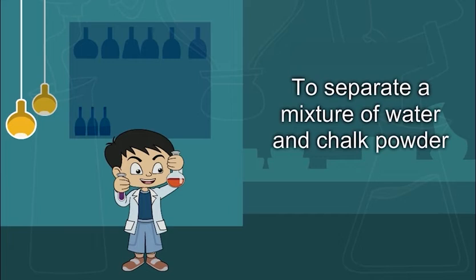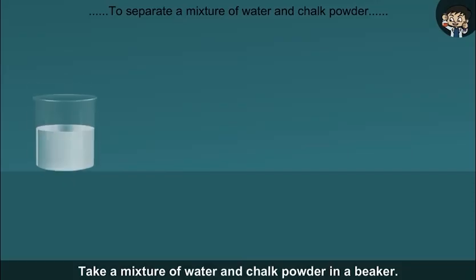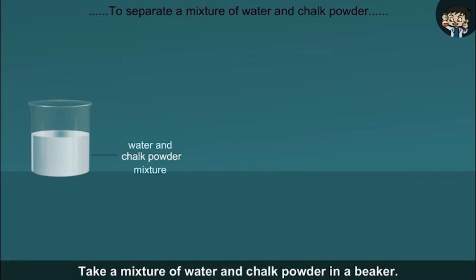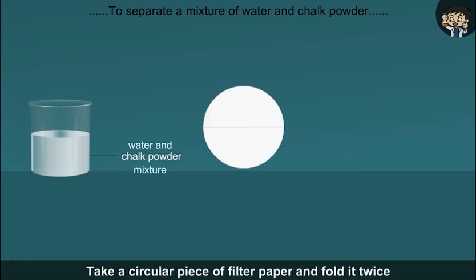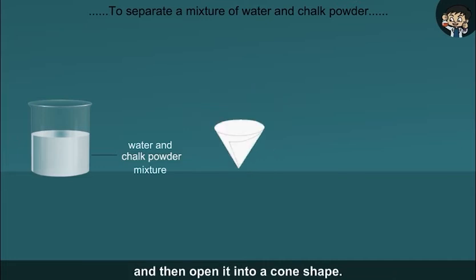To separate a mixture of water and chalk powder. Take a mixture of water and chalk powder in a beaker. Take a circular piece of filter paper and fold it twice and then open it into a cone shape.